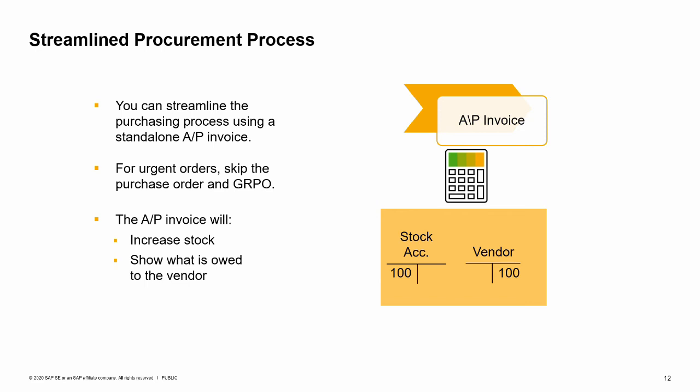The posting debits the stock account to show the increase in inventory and credits the vendor account to show the need to pay the vendor. Because an AP invoice that does not reference a goods receipt PO will increase inventory, it is important to make sure there is no prior goods receipt if you create an AP invoice without reference.